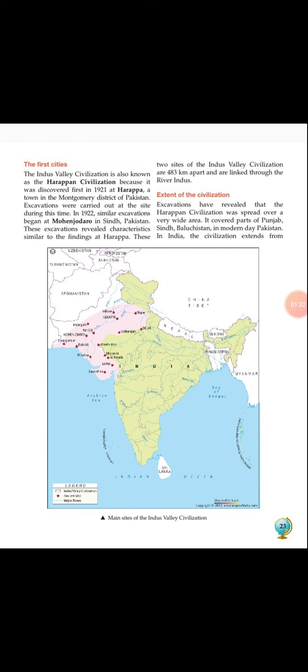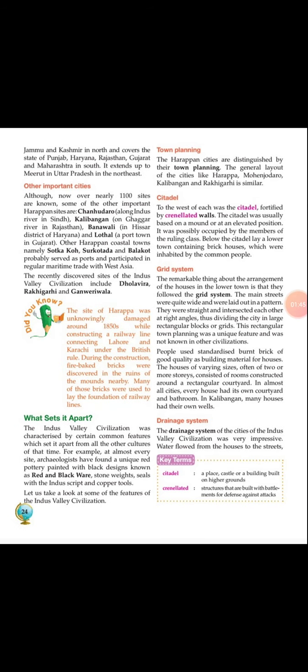These two places are located in Pakistan. The Indus Valley Civilization covered parts of Punjab, Sindh, Balochistan, and modern-day Pakistan. We also discussed other important cities like Chahundaro, Kalibanga, Banwali, Lothal, Sotkako, Surkotoda, Balakot, Dholavira, Rakhigadi, and Kanerivala — all sites of the Indus Valley Civilization.